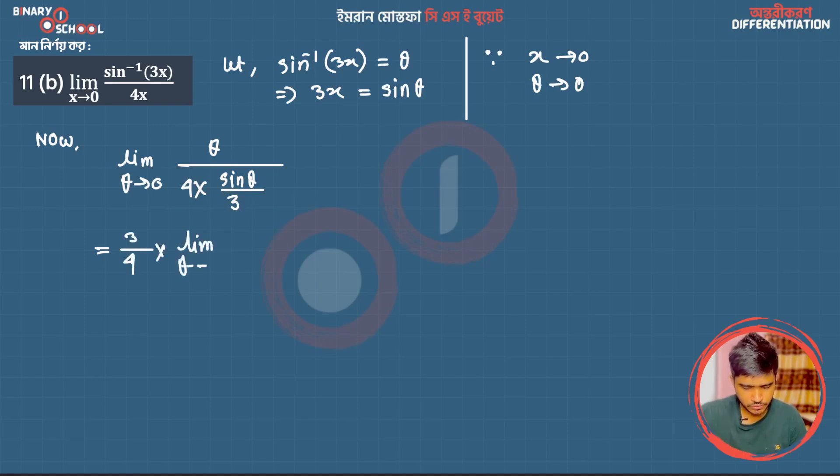Now applying limit theta tends to 0, we get 3 by 4 into 1, which equals 3 by 4.